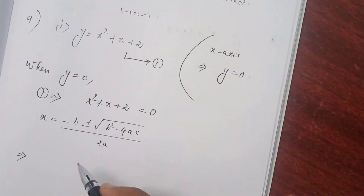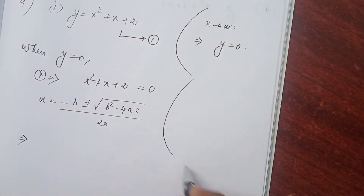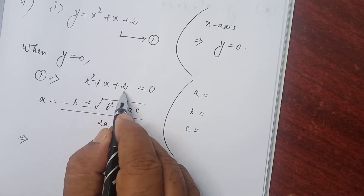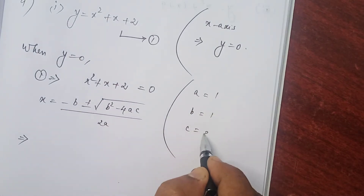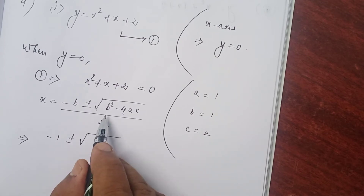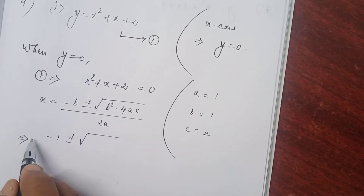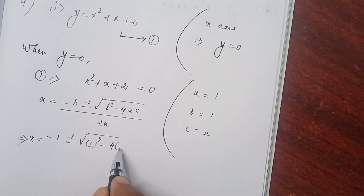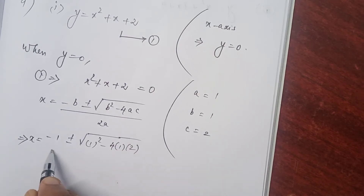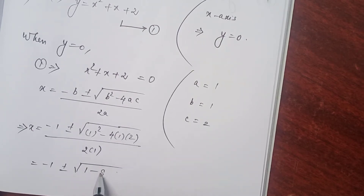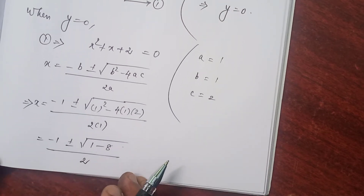Here the values are: a = 1 (coefficient of x²), b = 1 (coefficient of x), c = 2 (constant term). Substituting: x = (−1 ± √(1² − 4·1·2)) / (2·1) = (−1 ± √(1 − 8)) / 2 = (−1 ± √(−7)) / 2.